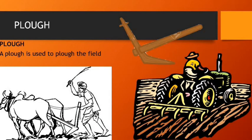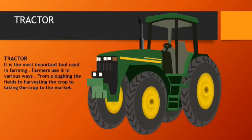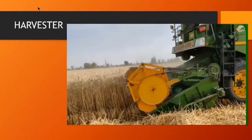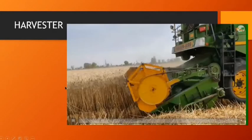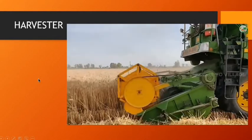A plough is used to plough the fields. A tractor is the most important tool used in farming. Farmers use it in various ways — from ploughing the field, to harvesting the crop, to taking the crop to the market. Tractors are used extensively. The harvester is also used in farming and is very useful for huge fields.